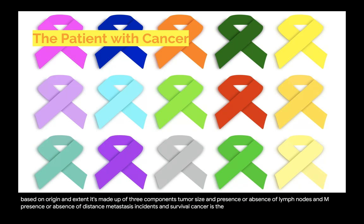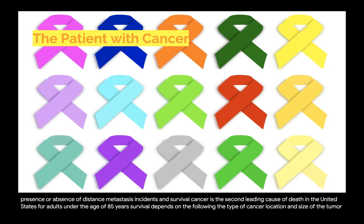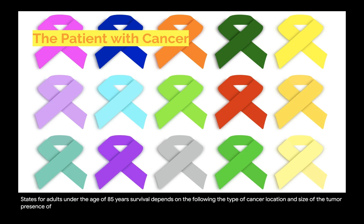Cancer is the second leading cause of death in the United States for adults under the age of 85 years. Survival depends on the following: the type of cancer, location and size of the tumor, presence of distant metastasis, tumor sensitivity to treatment, physical condition, comorbidities, and age.